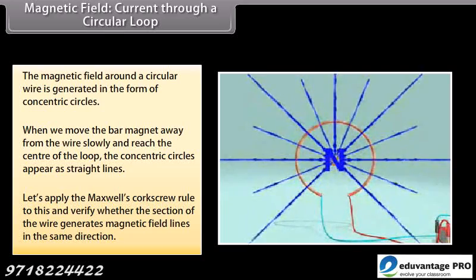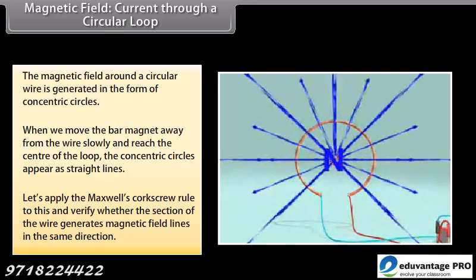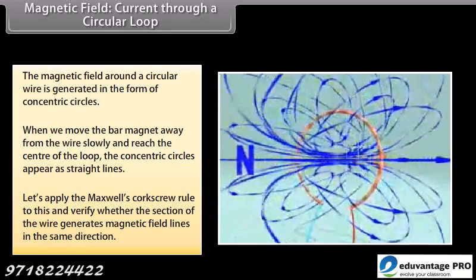Now try applying Maxwell's corkscrew rule to this and check whether every section of the wire is able to generate magnetic field lines in the same direction.